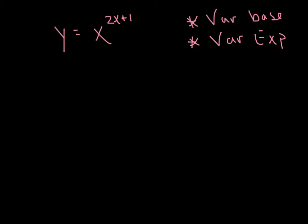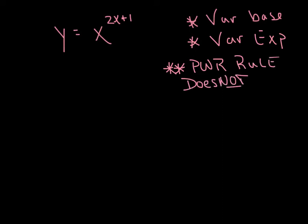We've got x's both in the base and the exponent, and big asterisk here: the power rule does not apply. The reason it doesn't apply is because the power rule requires the exponent to be a real number — the exponent can't be a function of x. So in this particular case, when I have a variable in both the base and the exponent, I'm going to use logarithmic differentiation — I'm going to take the natural log of both sides.